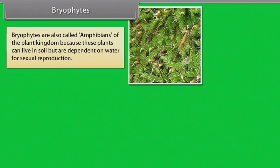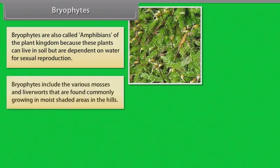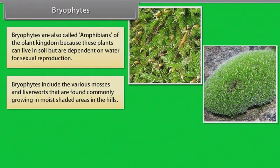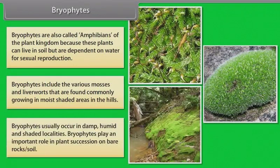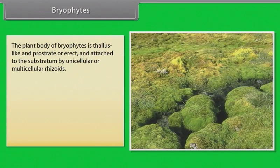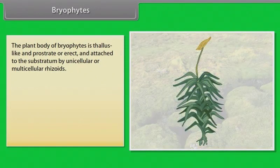Bryophytes are also called amphibians of the plant kingdom because these plants can live in soil but are dependent on water for sexual reproduction. Bryophytes include the various mosses and liverworts that are found commonly growing in moist shaded areas in the hills. Bryophytes usually occur in damp, humid and shaded localities. Bryophytes play an important role in plant succession on bare rocks or soil. The plant body of bryophytes is thallus-like and prostrate or erect and attached to the substratum by unicellular or multicellular rhizoids.